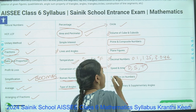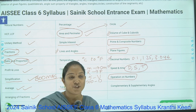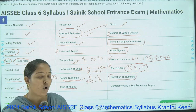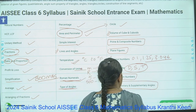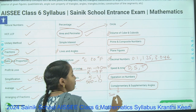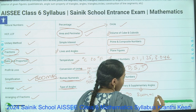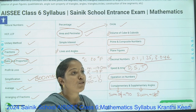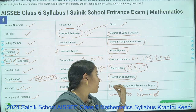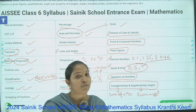Next is Operations on Numbers — addition, subtraction, multiplication, and division, but with bigger numbers as they appear in exams. Next is Complementary and Supplementary Angles. Complementary means the sum of two angles is 90 degrees, and supplementary means the sum is 180 degrees. They will give you an angle and ask for its complementary or supplementary angle. To find the supplementary angle, we subtract from 180.